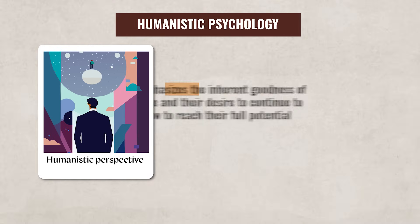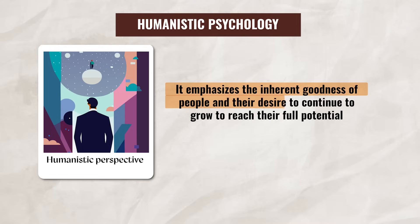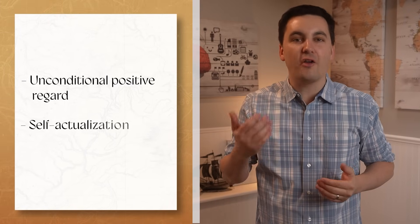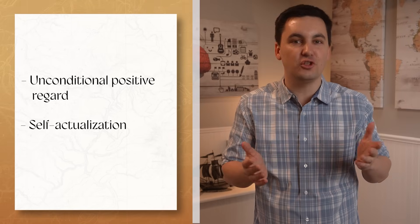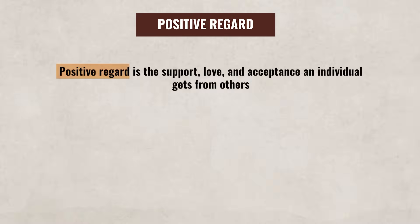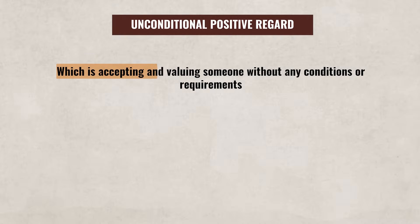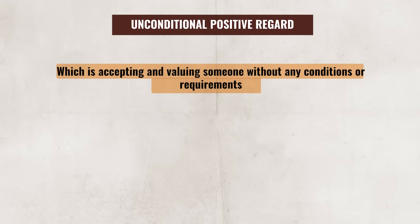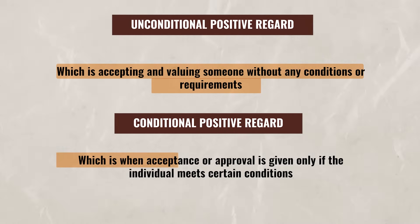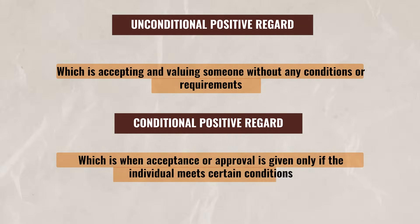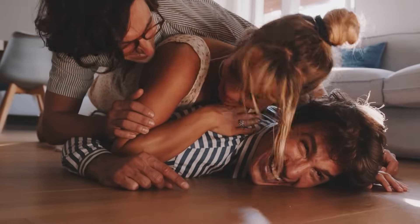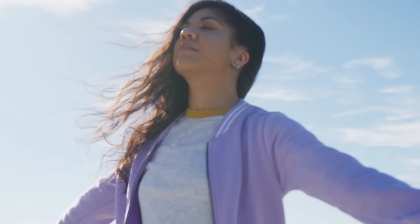So that was the psychodynamic approach, but what about the humanistic approach? Remember, humanistic psychology emphasizes the inherent goodness of people and their desire to continue to grow to reach their full potential. Humanistic psychology focuses on unconditional positive regard and the drive for self-actualization as key forces that shape an individual's personality and motivation. Positive regard is the support, love, and acceptance an individual gets from others. Unconditional positive regard is accepting and valuing someone without any conditions or requirements, while conditional positive regard is when acceptance or approval is given only if the individual meets certain conditions. People who receive unconditional positive regard, especially from important figures like parents or teachers, will likely develop a healthier self-concept and higher self-esteem.